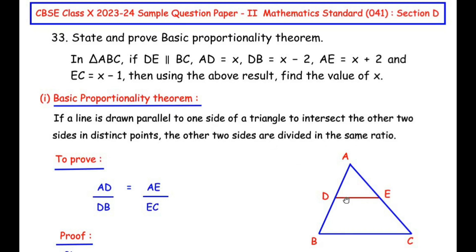According to the statement, if we draw a line parallel to one side of the triangle then the other two sides are divided in the same ratio. For example, if side AB is divided in the ratio 1:2 then the same ratio is maintained on side AC, which also becomes 1:2. So this is what we have to prove: that AD over DB is equal to AE over EC.